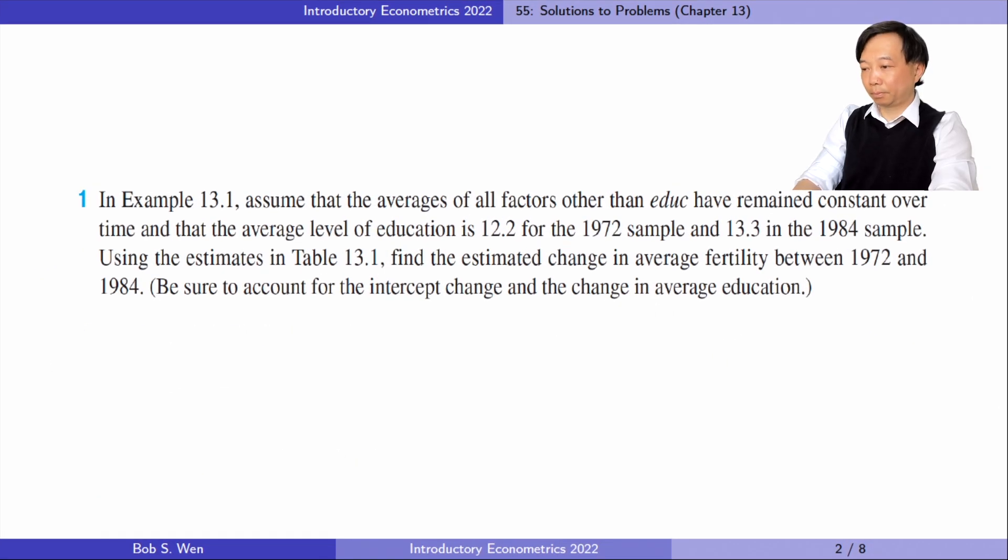In the first problem, we assume that in example 13.1, the averages of all factors other than education have remained constant over time, and that the average level of education is 12.2 for the 1972 sample and 13.3 for the 1984 sample. Using the estimates in table 13.1,